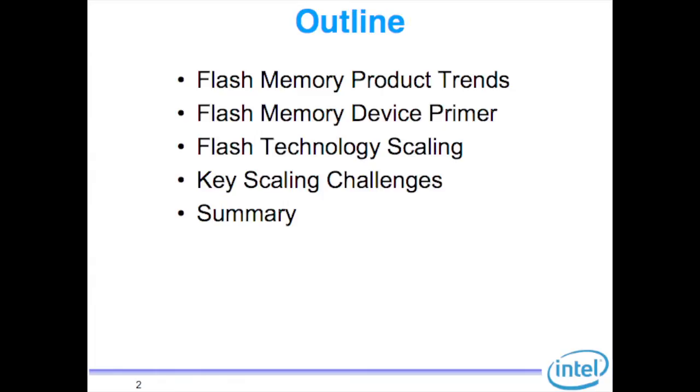The outline is: a quick review of product trends, a device primer, how does a basic flash floating gate cell really work, technology scaling — trying to make things smaller, cheaper, better, and faster — what are the key challenges in scaling a flash, how that compares to standard CMOS scaling, and then a summary.